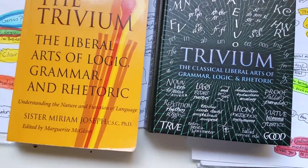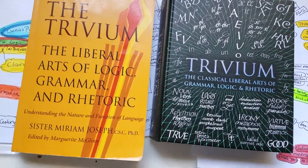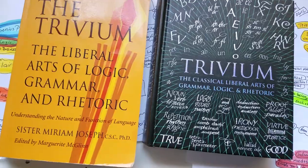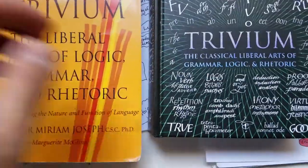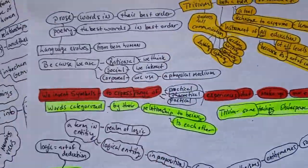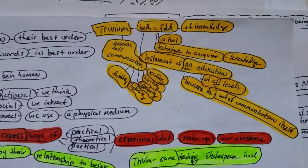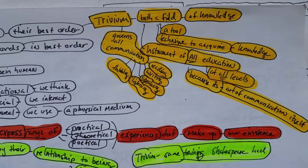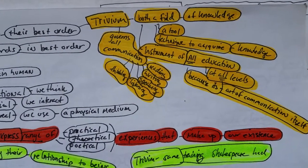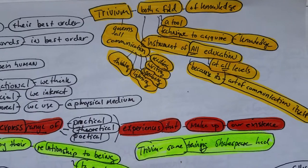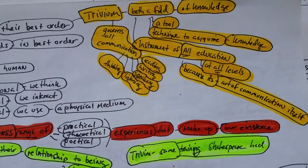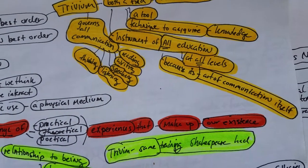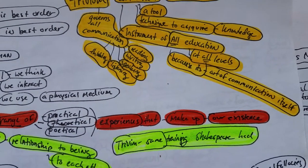I've been getting a lot of requests about people wanting to know how to use the trivium. How do you use the trivium? What do you do with it? Keep in mind, these are mind maps here, these are visual notes. The trivium is both a field of knowledge and a tool and a technique to acquire the knowledge. It governs all communication — reading, writing, speaking, listening, and thinking. It is an instrument of all education at all levels because it is the art of communication itself.